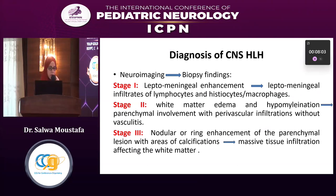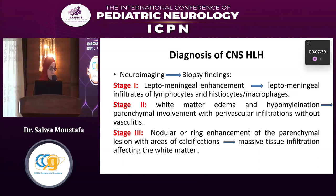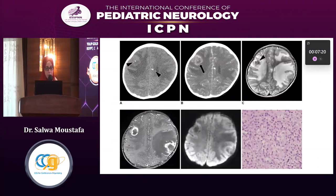Neuroimaging and biopsy findings are also non-specific for CNS-HLH. At stage one, areas of leptomeningeal enhancement may be found, and biopsy may show leptomeningeal infiltrate of lymphocytes, histiocytes, and/or macrophages. At more advanced stages, imaging may show white matter edema and hypomyelination, with biopsy showing parenchymal involvement and perivascular infiltration with or without vasculitis. At the most advanced stage, nodular or ring enhancement of parenchymal lesions with calcification may be seen, and biopsy may show massive tissue infiltration affecting the white matter.